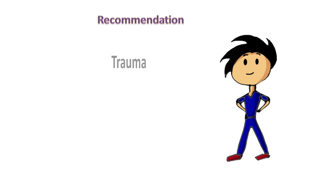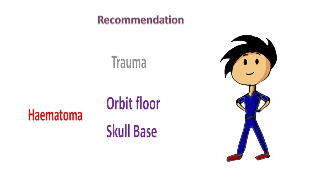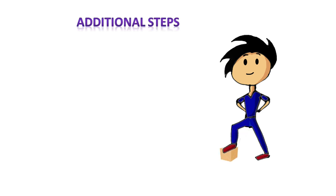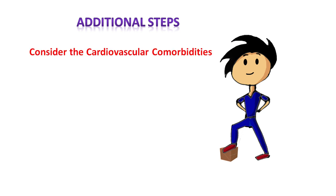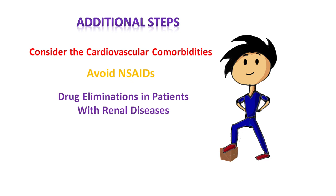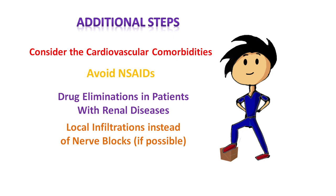In trauma patients, care should be taken to prevent hematoma in orbit floor or skull base fractures. Other important aspects of management include considering cardiovascular comorbidities; NSAIDs can potentiate the antiplatelet action of aspirin and can also precipitate GI ulcerations. Consider drug elimination in patients with renal disease, and the challenges with regional anesthesia — try local infiltrations instead of nerve blocks if possible. The role of local hemostatic measures is paramount, including judicious use of cautery, oxidized cellulose, and pressure packings.